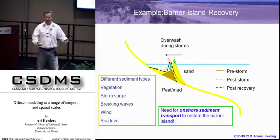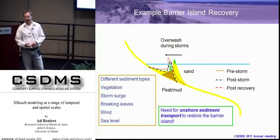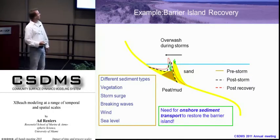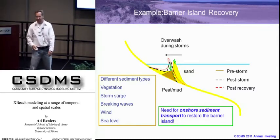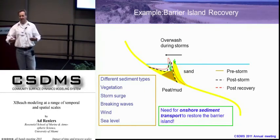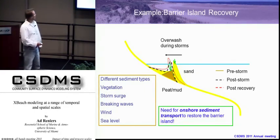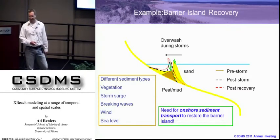I started looking at what happens if we take the barrier island recovery as a case. We know that XBeach does a good job in getting rid of all the sand — now we'd like to get it back. So we have the initial profile, and then we have the post-storm profile, and we need some mechanism that actually brings the sand from offshore to the coast so it can build up, the wind can pick it up, and we can get a new barrier island. We need onshore sediment transport to restore this barrier island.